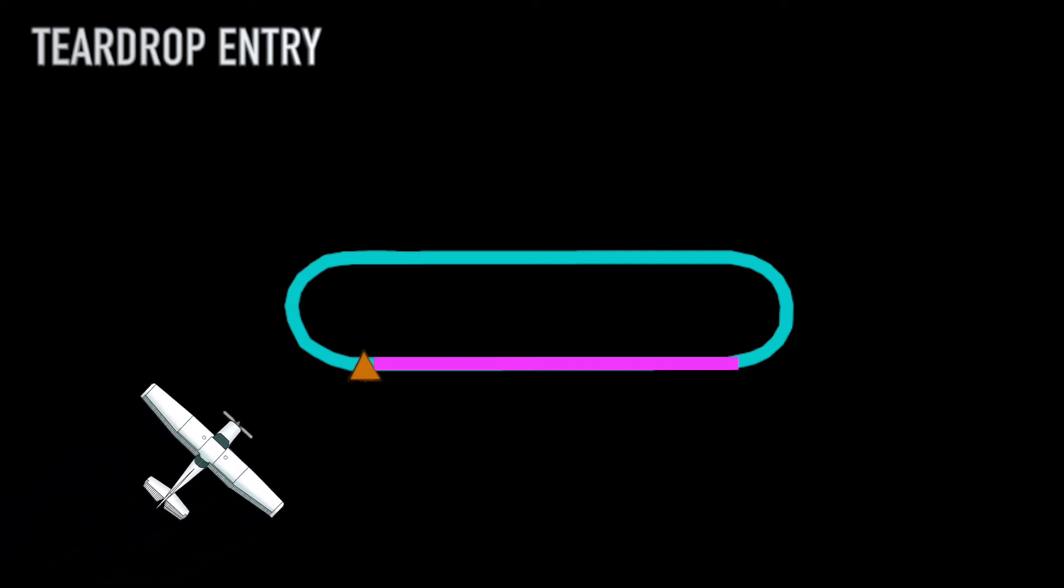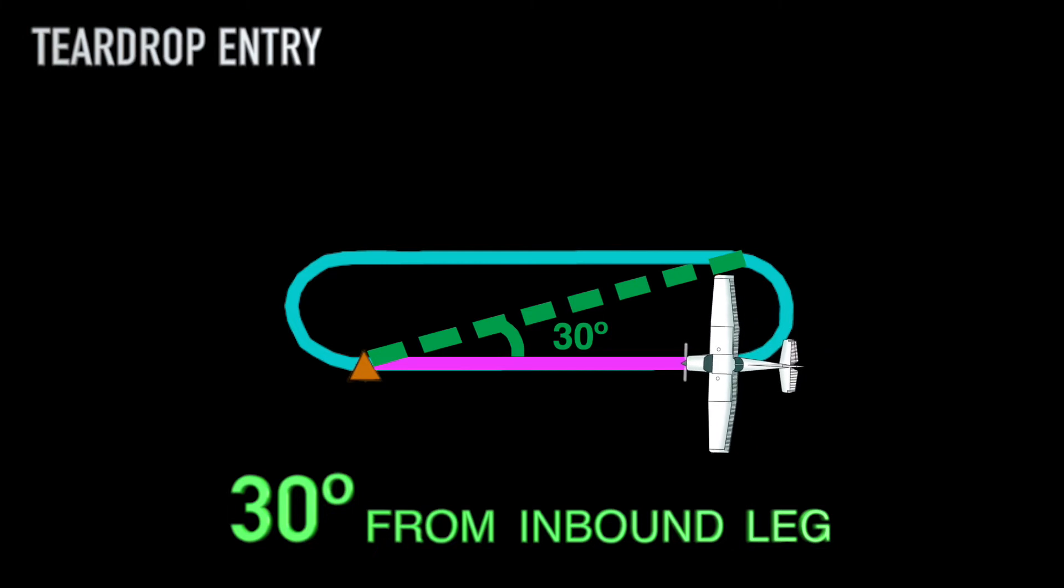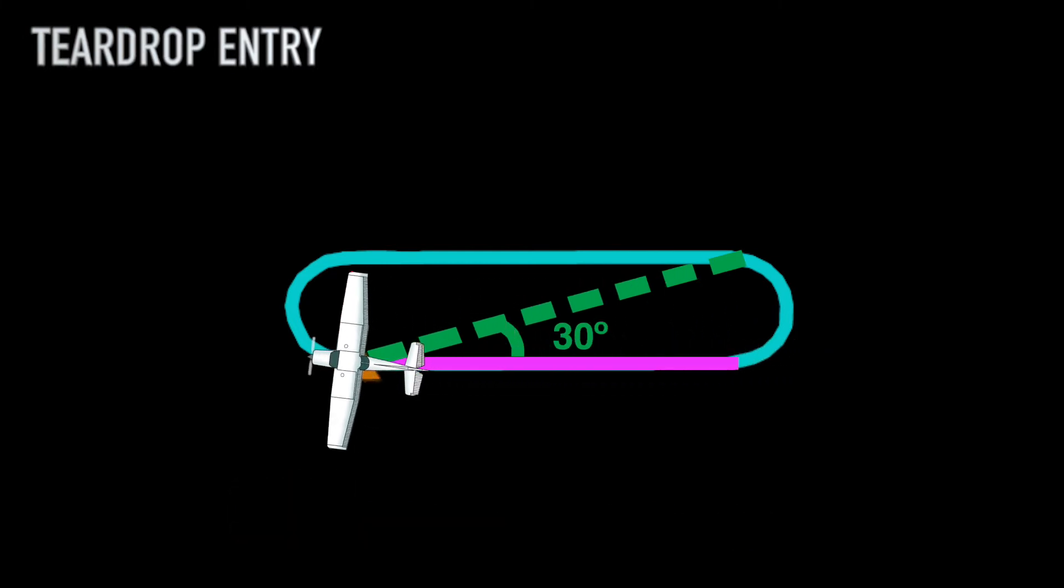And for the last type of entry, the teardrop, the aircraft will fly a path that will first go over the fix into the protected area of the holding pattern at about 30 degrees off from the inbound leg and then turning back around towards the fix lining up with the inbound leg.